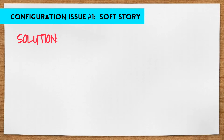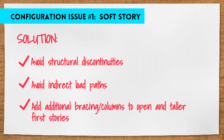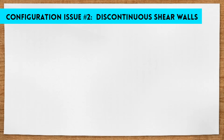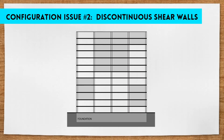The best solution to soft stories is to avoid any structural discontinuities that will create indirect load paths, and to add additional bracing or columns to open and taller first stories. The second major issue is known as discontinuous shear walls. The purpose of a shear wall is to collect diaphragm loads at each floor and bring them directly down to the foundation. If a building is made with shear walls that end at the second story without continuing down to the foundation, it can result in serious overstressing and lead to collapse.